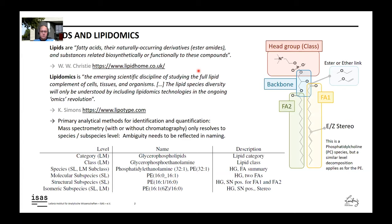Today I will talk about lipids and lipidomics, and specifically about lipid nomenclature. Lipids are, in principle, fatty acids — naturally occurring derivatives like esters, amides, and substances related biosynthetically or functionally to these compounds. This is basically quoted from William Christie, who runs a very important blog on lipids.